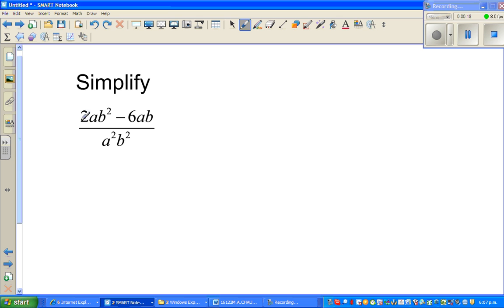So I'm going to write this like this: 2 times—this dot means times—2 times a times b times b minus 2 times 3 times a times b, over a times a times b times b.